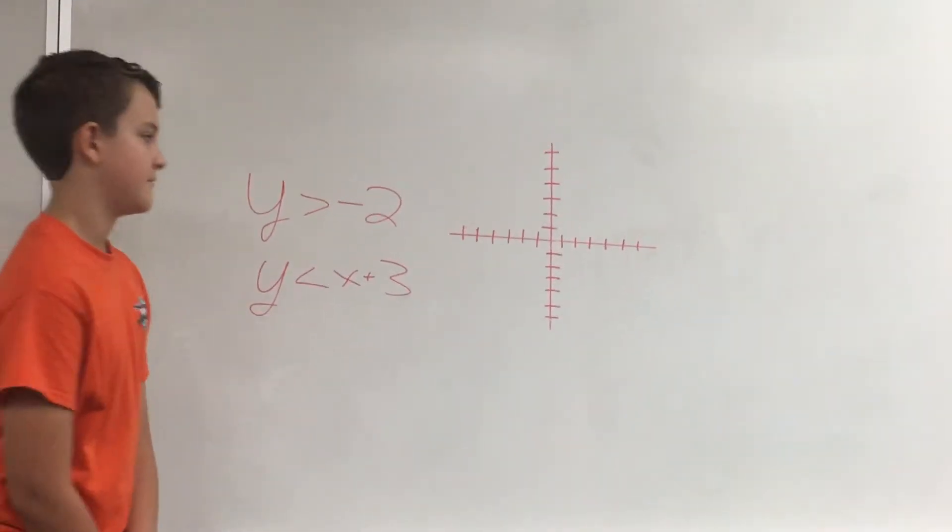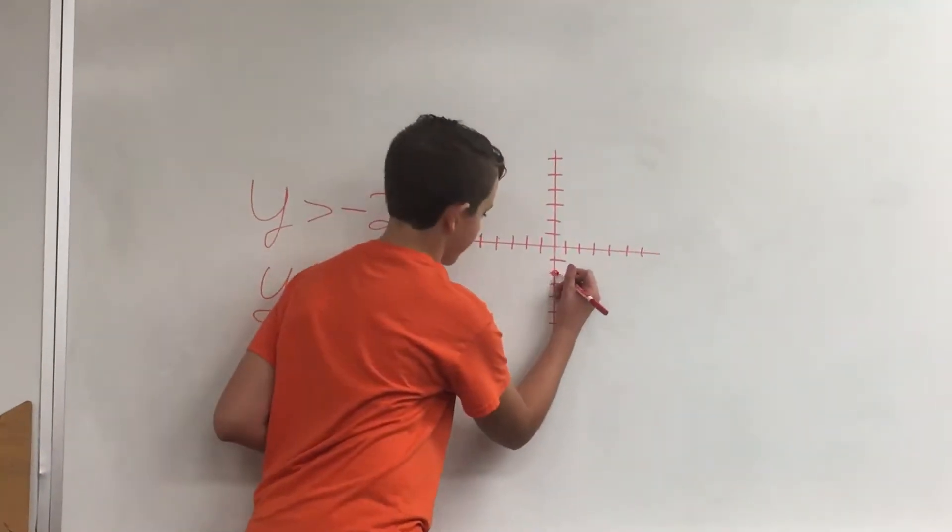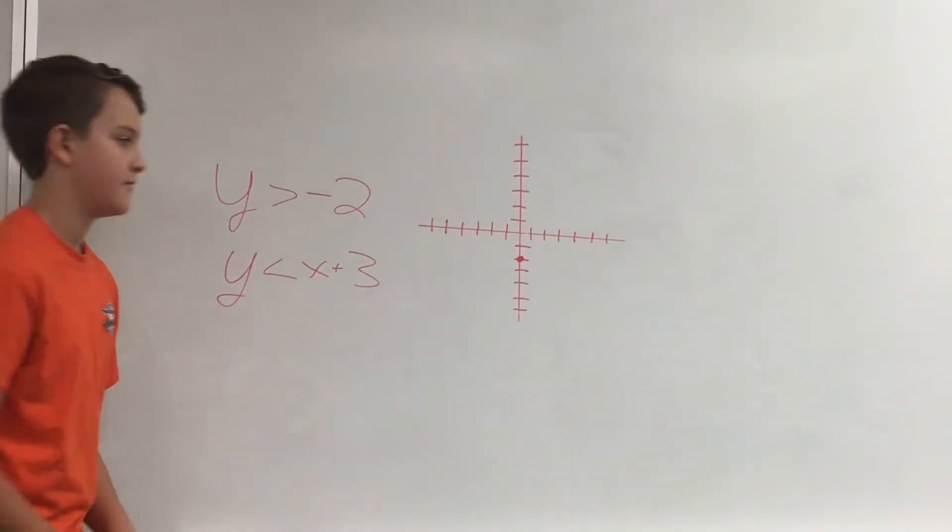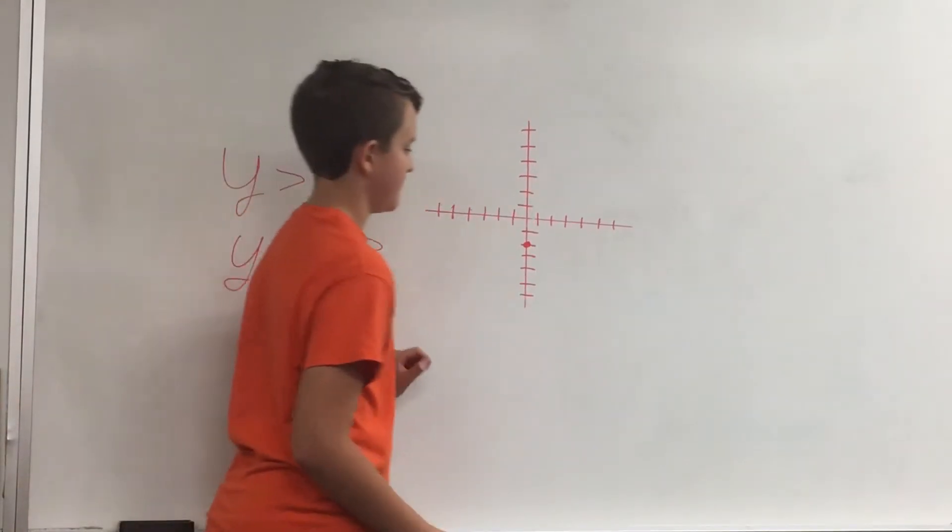Step 1. Plot your y value, negative 2. Then you need to figure out if it's a dotted line or a solid line. In this case, it's a dotted line. You'll grab the dotted horizontal line.